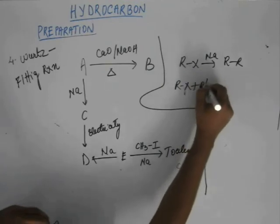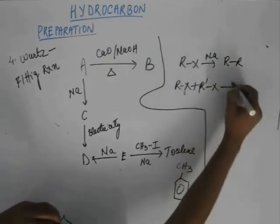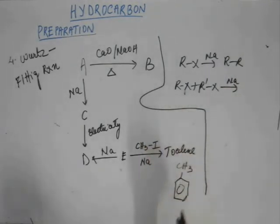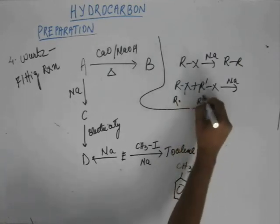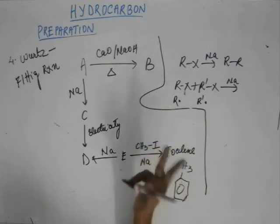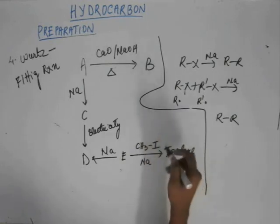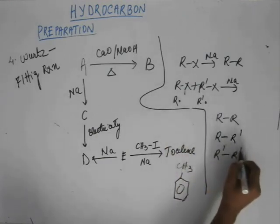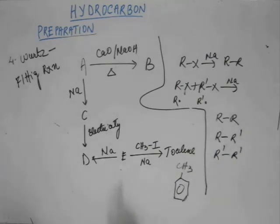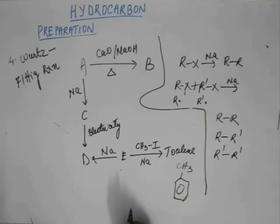Now suppose we have R-X and R'-X in the same system and we give sodium. In this case, sodium will pump electrons into the anti-bonding orbitals of both R-X and R'-X, resulting in formation of both R dot and R'-dot. If R dot dimerizes with R dot, we get R-R. If R dot dimerizes with R'-dot, we get R-R'. If R'-dot dimerizes with R'-dot, we get R'-R'. So altogether there will be three kinds of products, with very close boiling points, making distillation and separation very difficult. This is why when we have a mixture of two different alkyl halides, Wurtz reaction produces multiple products, which is not preferred.